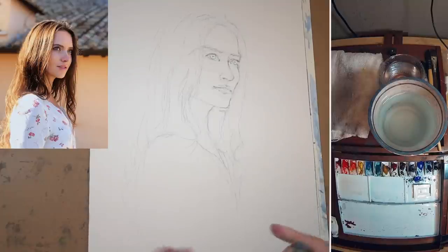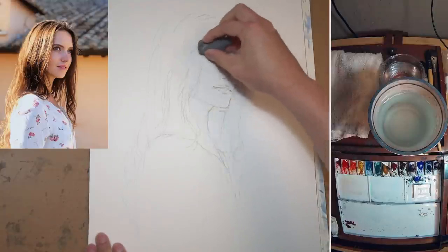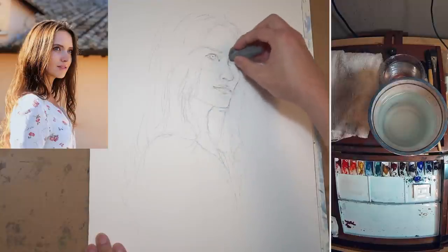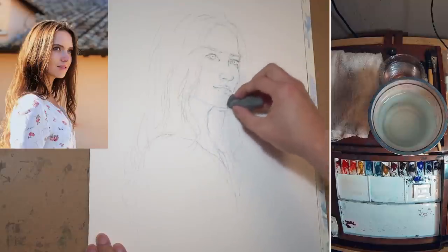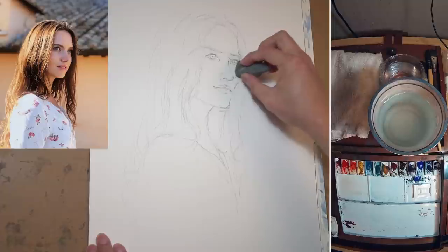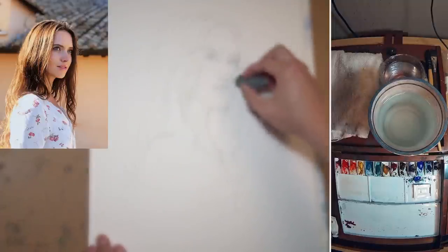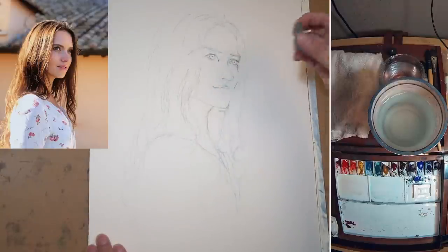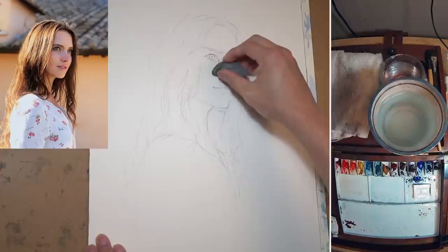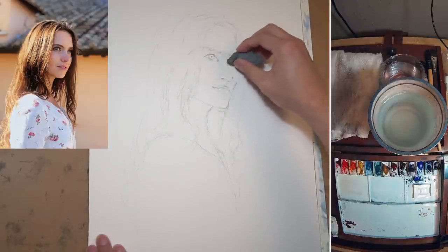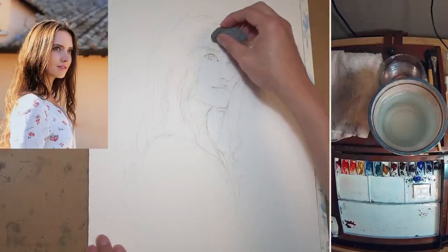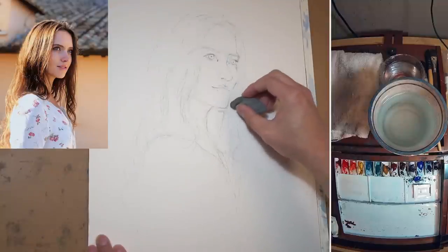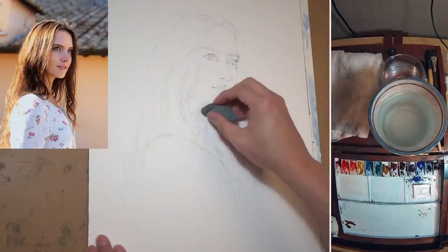Drawing is mostly done. I'm going to use my kneaded eraser and very lightly go over it, so all the loose lines I put in at the beginning will be erased. They are very, very lightly drawn so I'll be able to remove them quite easily. All the lines I made darker — all the anchor points — will remain. Those are really the things I need for the painting. I don't need all the construction lines, just the anchor points, so when I paint I have a good idea where things are.